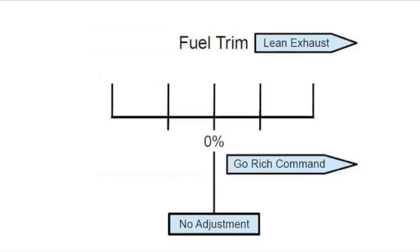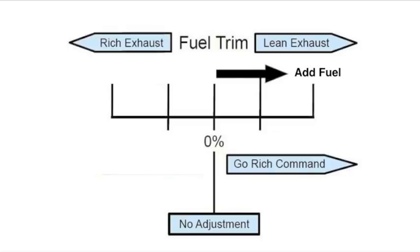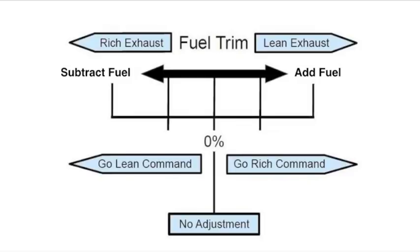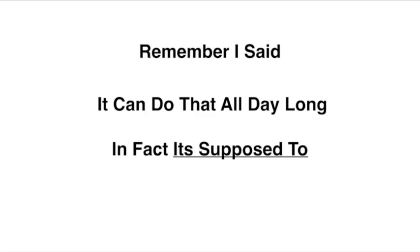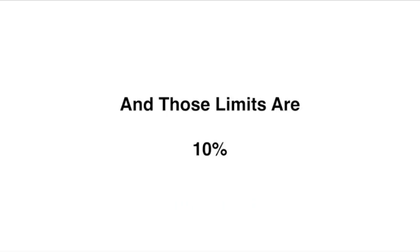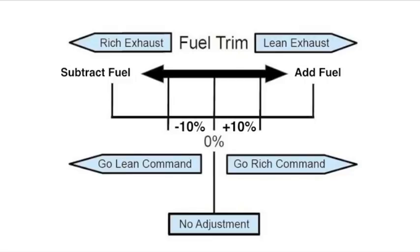So, if we have a lean exhaust, the PCM issues a go-rich command and it adds fuel. If we have a rich exhaust, the PCM issues a go-lean command and starts subtracting fuel. Remember I said it can do that all day long. In fact, it's supposed to, within limits. And those limits are 10%. So, you have a negative or a positive 10% limit in this graph.